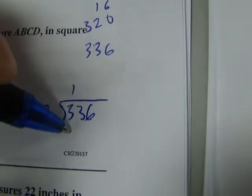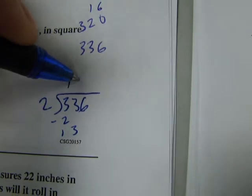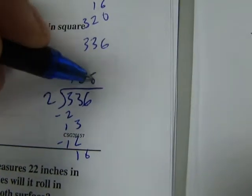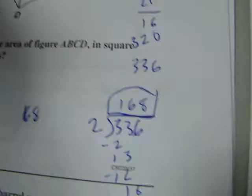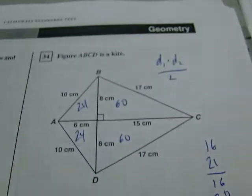2 goes into 3 one time, that makes 2. 2 goes into 13 six times, that makes 12. 2 goes into 16 eight times. Either way, we get 168 for our answer. So 168 is the area of this kite.